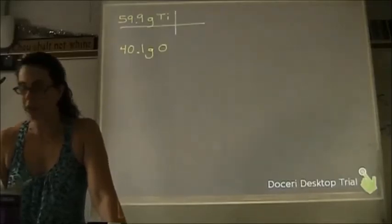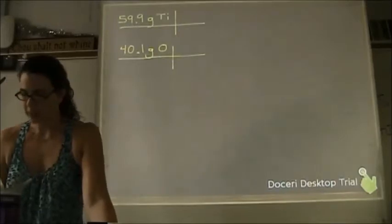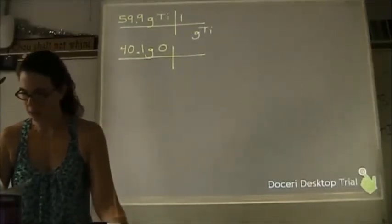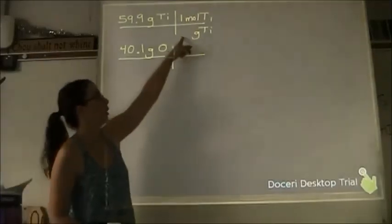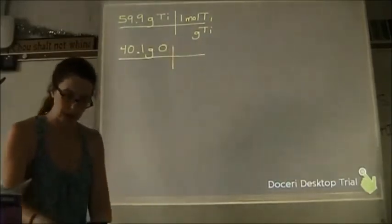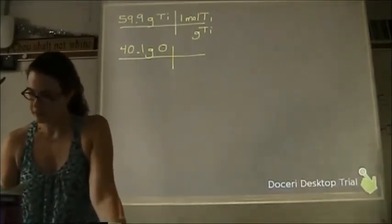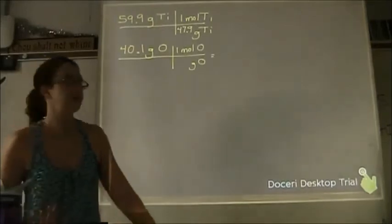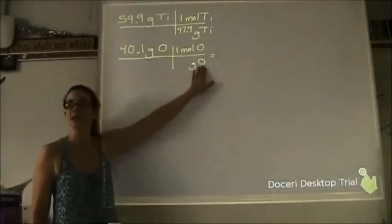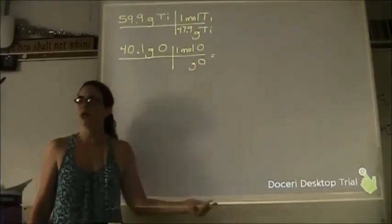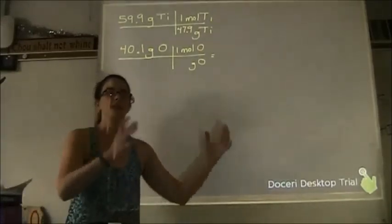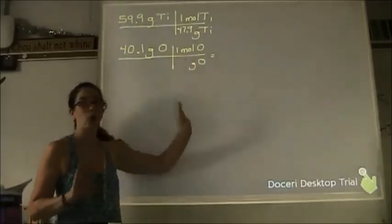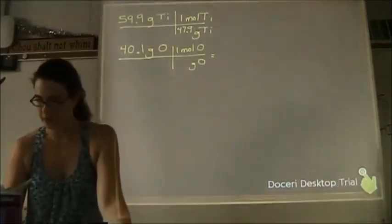Step two is a quick one-step conversion: get from grams of the element into moles of the element. Grams of titanium divided by one mole of titanium — where do I get that number? The periodic table. The molar mass of titanium is 47.9. Do the same for oxygen. Be careful: oxygen is within a compound here, not by itself, so I'm not using O₂ — I'm using just O, which is 16.